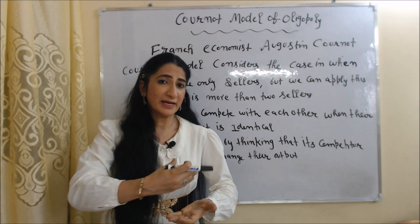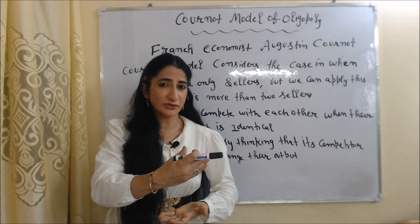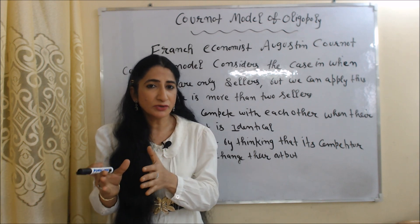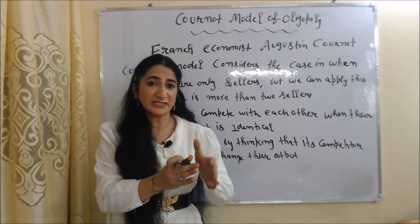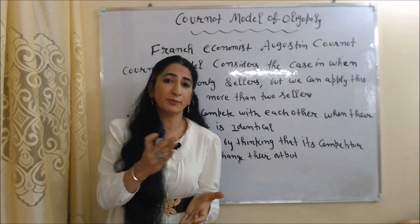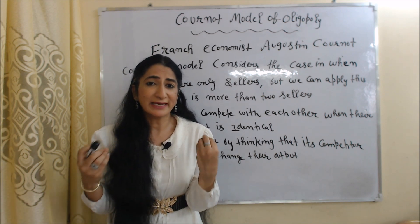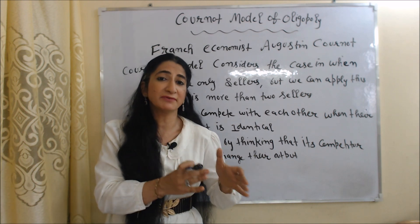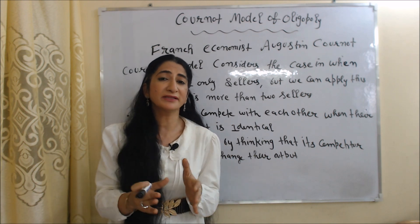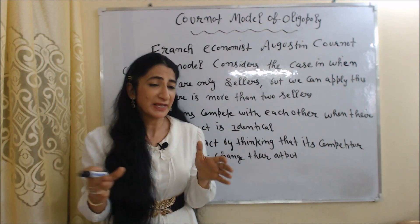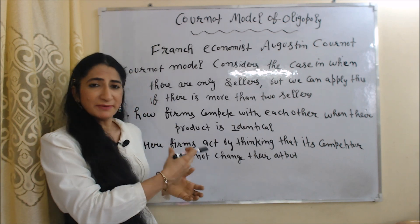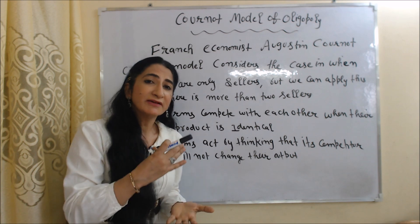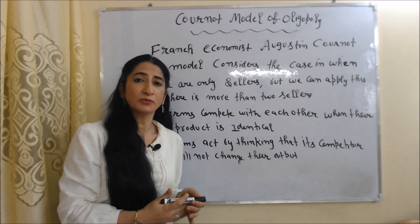But we can apply this model when there are more than two sellers. In this model, Cournot basically tells us how two firms compete with each other when their product is identical — or exactly the same. Each firm acts by thinking that their competitor firm will not change their output; they will keep their output the same.